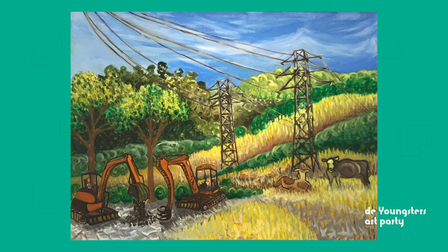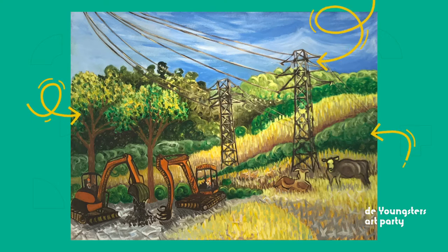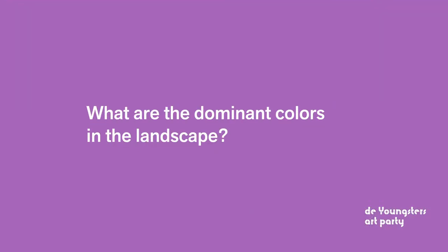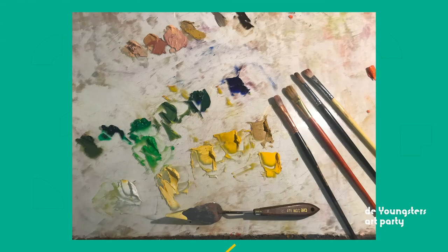In my painting, the dominant features are the hills and the trees, the large electric towers and bulldozers. Hmm, humans have been here. What are the dominant colors in the landscape? The dominant colors are different shades of yellows and greens with a bright blue sky.